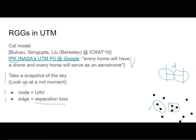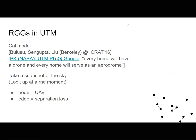The general approach is: look at the drones at any particular time, take a snapshot, and look at all pairs of drones. Whenever two drones are too close, you put an edge between them — meaning these two are in a conflict. That's how graphs like this show up in UTM.